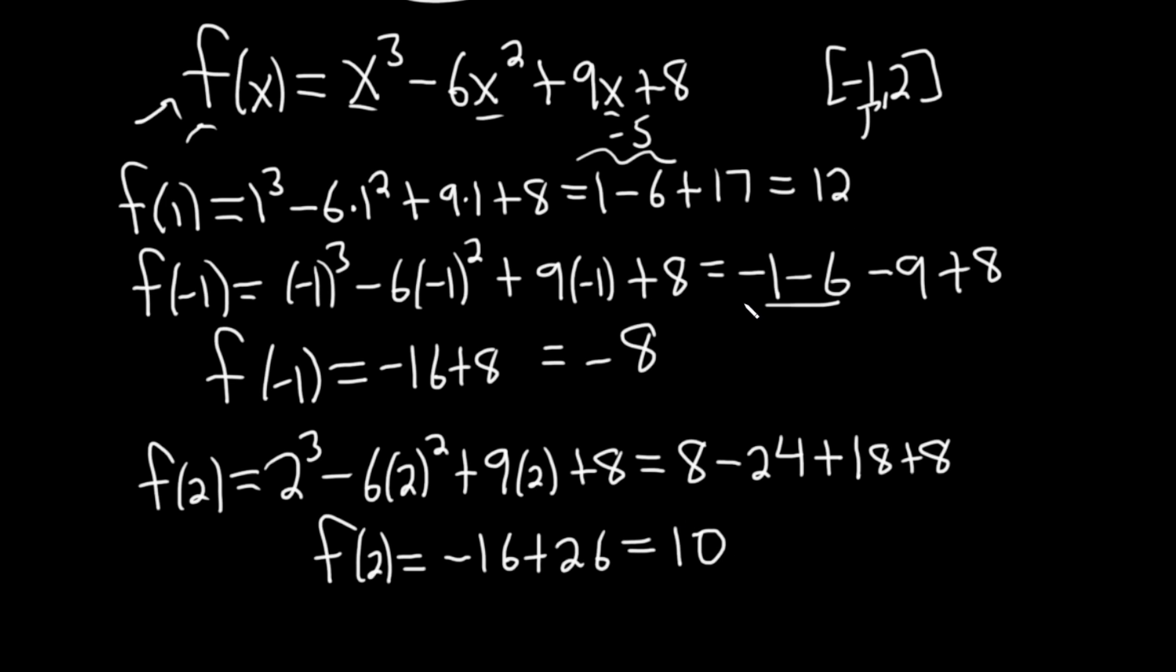So the biggest number we have here is 12, so this is the absolute max. It's the y value that's the maximum. It occurs at x = 1. Often for online homework, they want the ordered pair (1, 12). But this is where it occurs. Don't get confused - this is not the maximum. The maximum is the y value. It's really important to understand that.